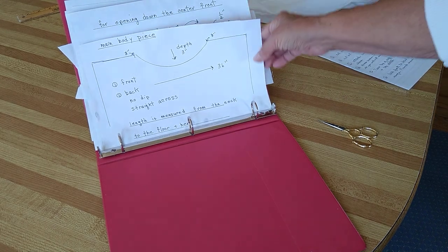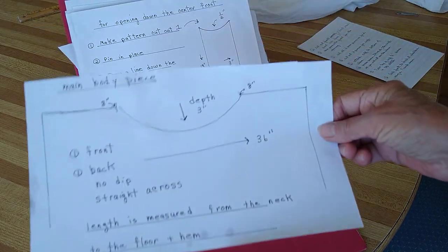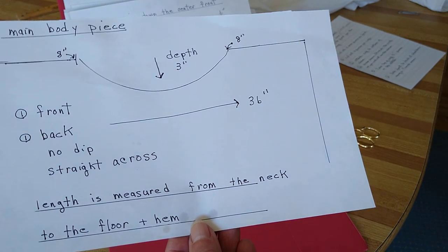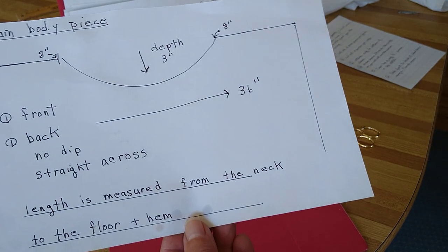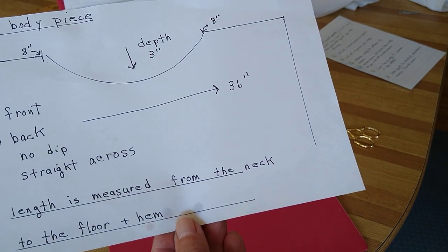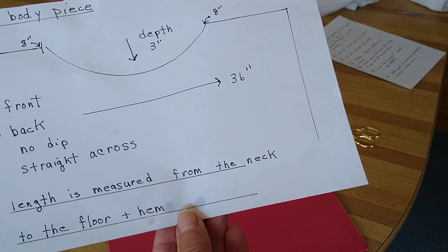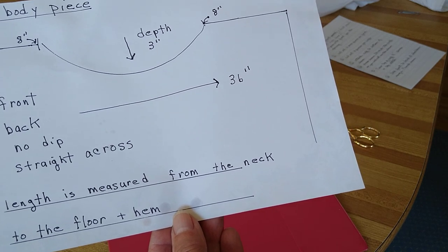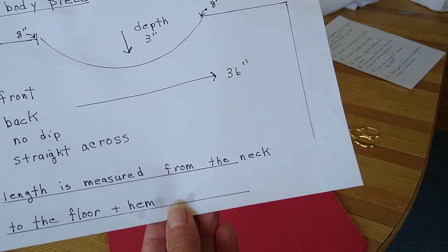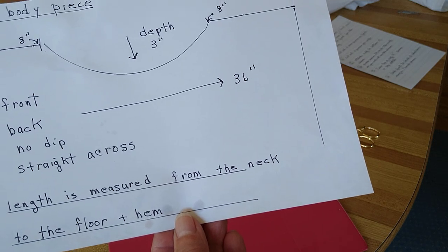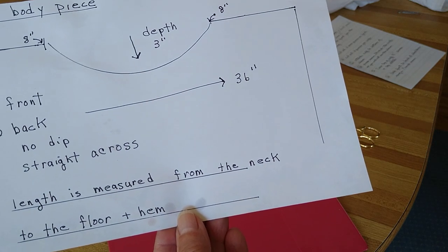This video will be on making an alb and construction of it. The main body piece is 36 inches across. The length depends on the height of who you are making it for. You usually measure it from the neck down to the floor plus a hem.